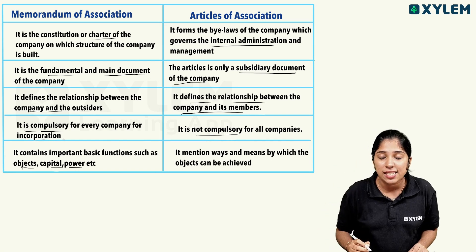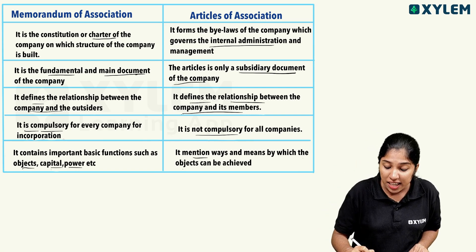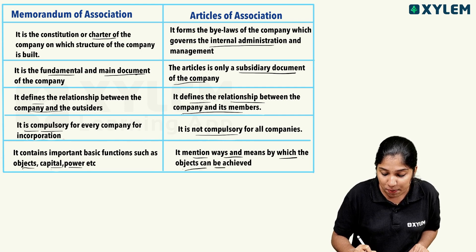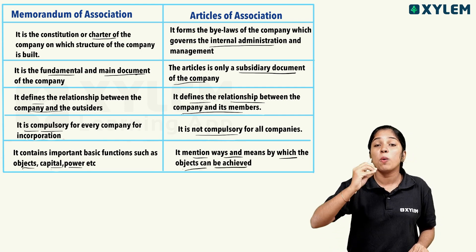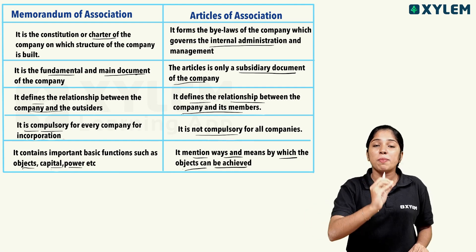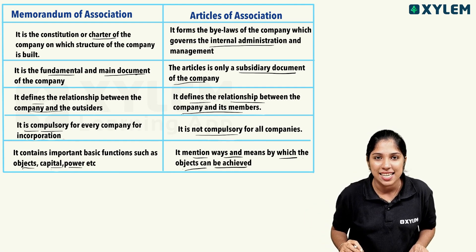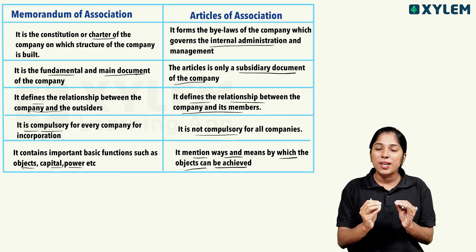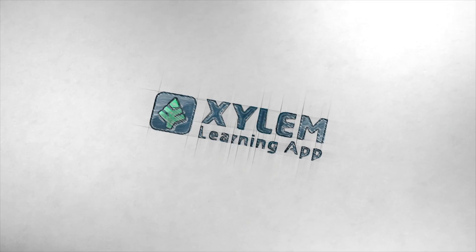In the case of the Articles of Association, it mentions the ways and means by which the objects can be achieved — that is how we achieve the activities mentioned in the Articles of Association. Thank you.